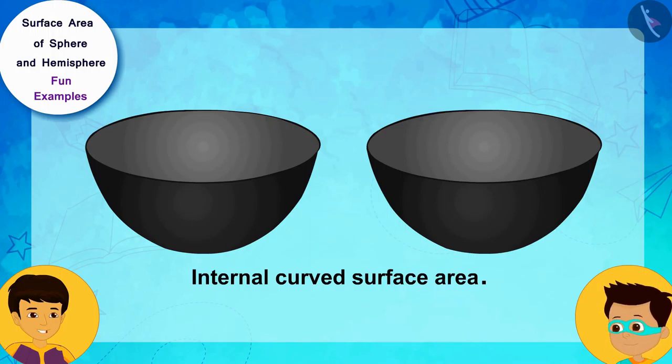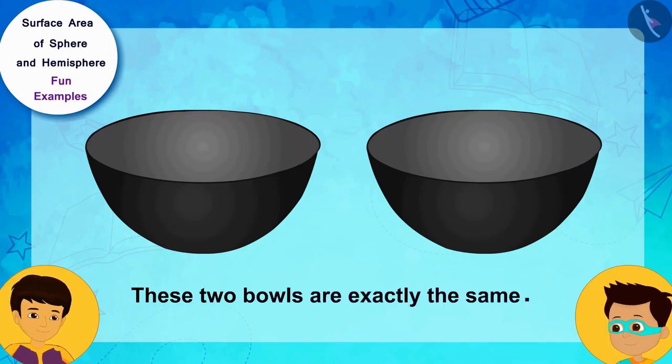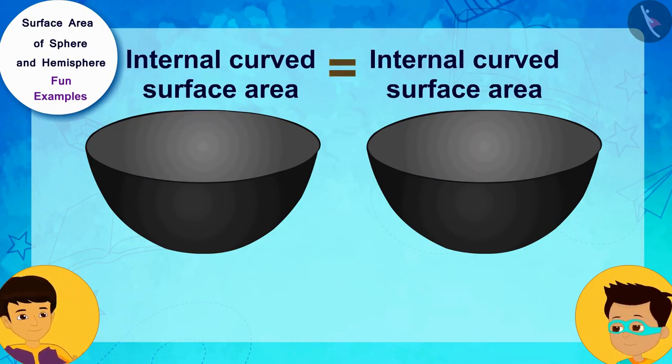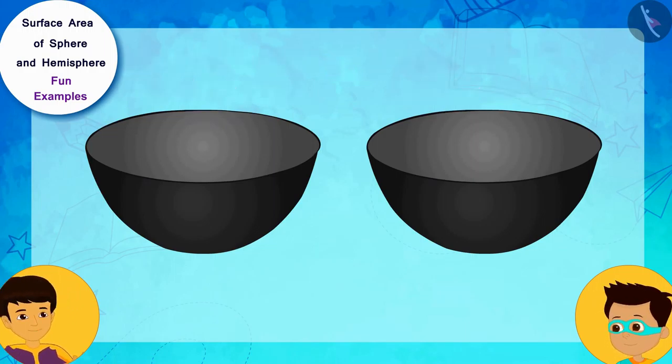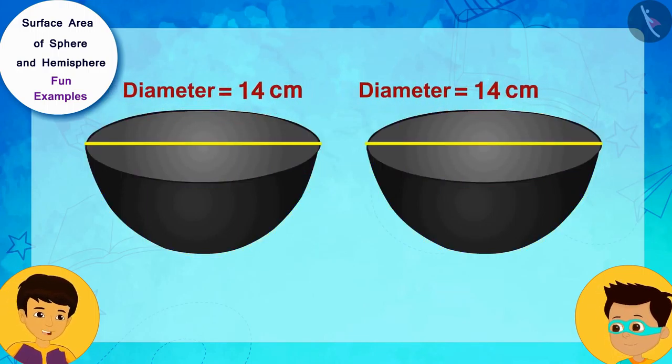I can easily find this. These two bowls are exactly the same, so their internal curved surface area will also be equal. The bowl is a hemisphere and has an internal diameter of 14 centimeters.